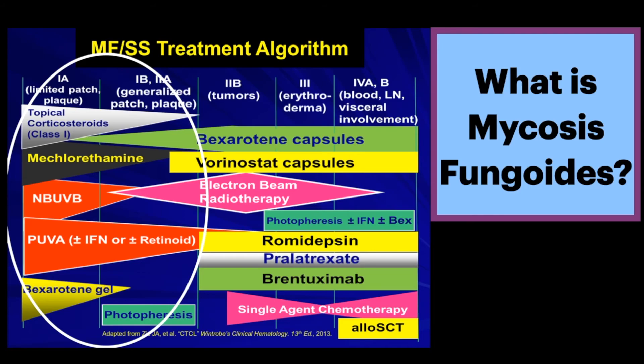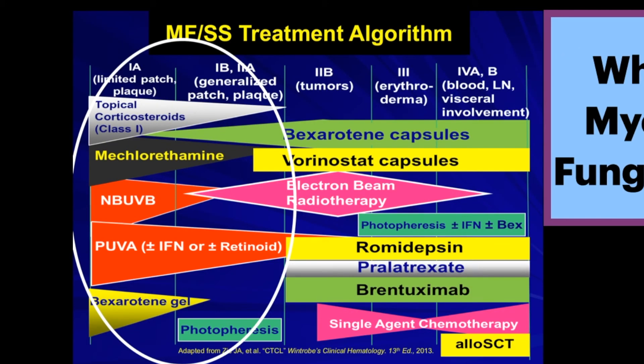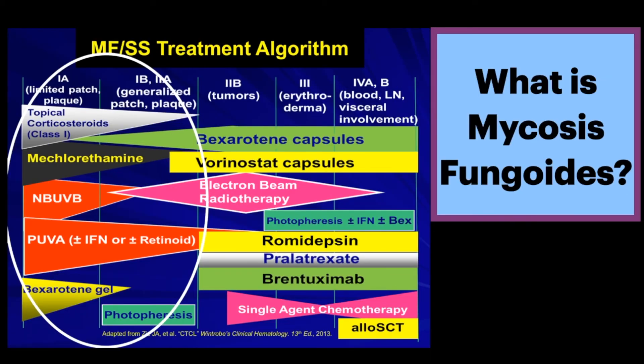Prognosis depends on the extent and stage of disease. Extracutaneous involvement decreases survival. Treatment consists of radiation therapy, topical corticosteroids, phototherapy, ultraviolet treatment, electron beam radiation, interferon, and systemic cytotoxic therapy. Most of these treatments tend to be palliative, unfortunately.